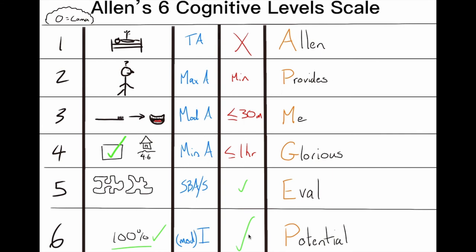Here are the attention span timeframes by level. At level one, there's pretty much no attention. Level two may have a couple of minutes. Level three is about 30 minutes or less. Level four is roughly an hour or less attention span. Think about it practically — if somebody has limited attention, new learning won't happen. When a person achieves better attention, that's when new learning starts to occur.